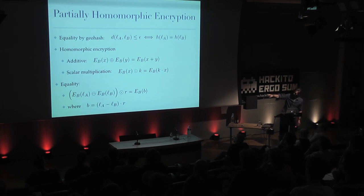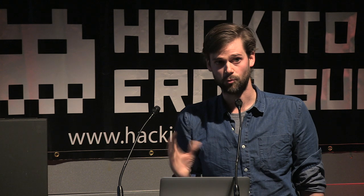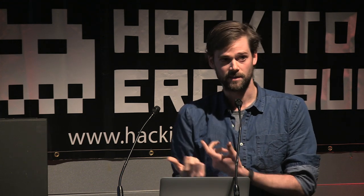Our equality check is to subtract the two ciphertexts, giving us the difference. If they're the same, we get zero — meaning they're in the same location. However, if they're not the same, we get a number revealing a bit too much. So we mask this by multiplying with a random value, and that's what the server sends back. If you get zero, you get zero in the real protocol too. If you get a random value, you could have generated it yourself — you're not learning anything more than the one bit.